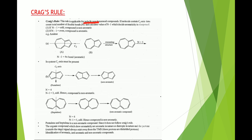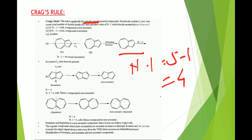Let's apply Craig's rule to azulene. We pass a C2 axis so that the molecule is divided into two equal parts, then calculate n — the total number of double bonds — which is five. Now, n minus 1 equals five minus 1, which equals four. Four is an even number, therefore the compound is aromatic. Hence azulene is classified as an aromatic compound.